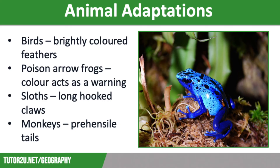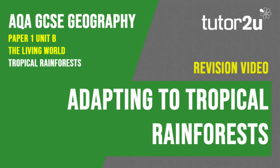Our final example is that of the many species of monkeys you will find in the rainforest. These species of monkeys have prehensile tails, which means that they can use them to grip things and for balance. That concludes this Tutor2U revision video focusing on the many adaptations that plants and animals make in the rainforest. Thank you for watching.